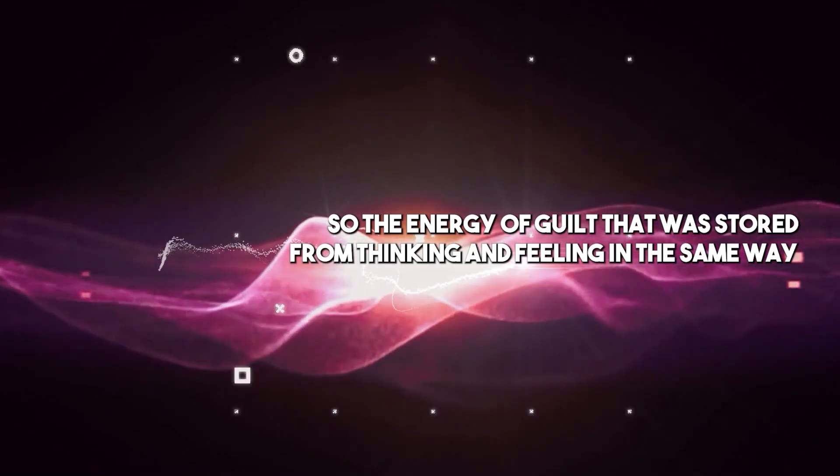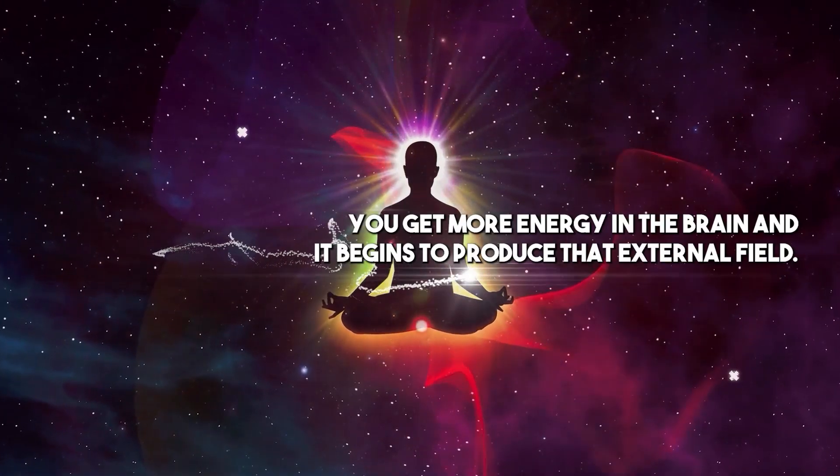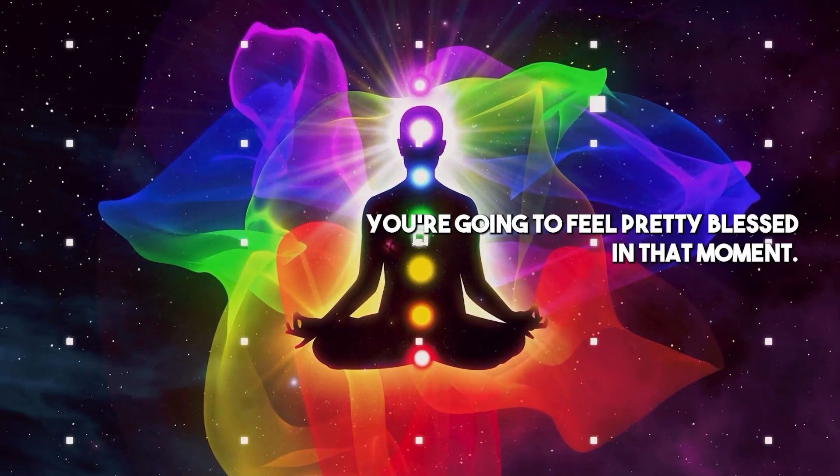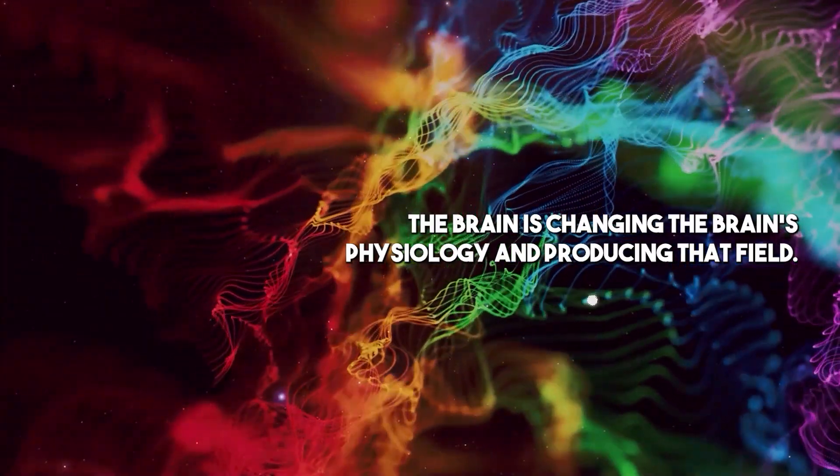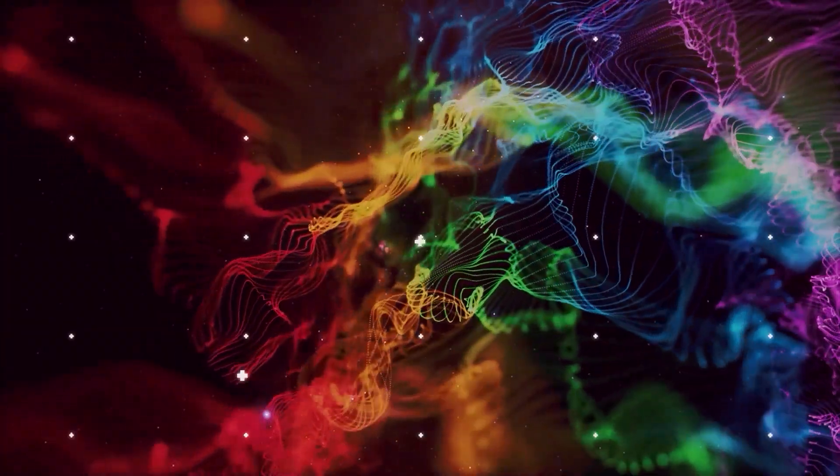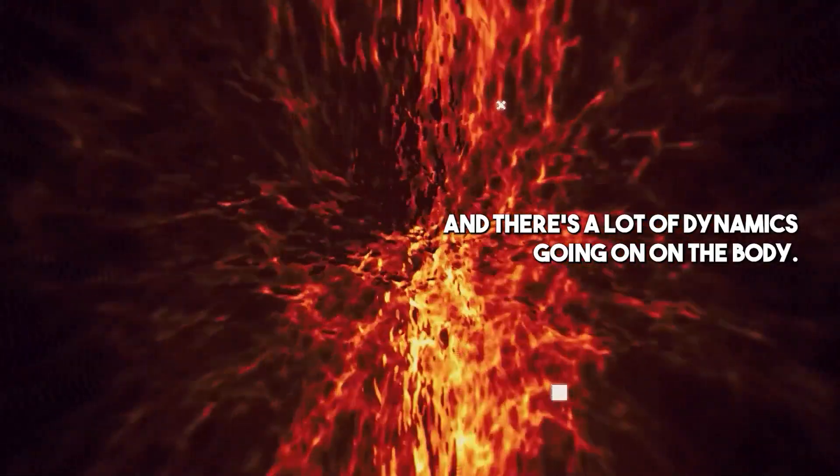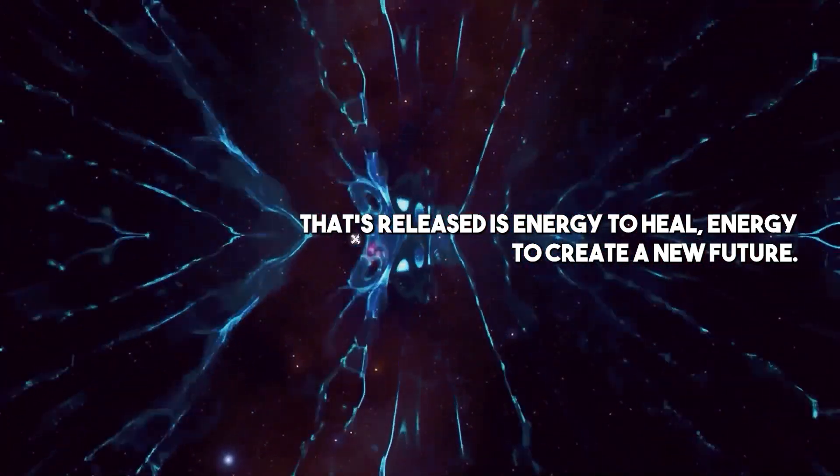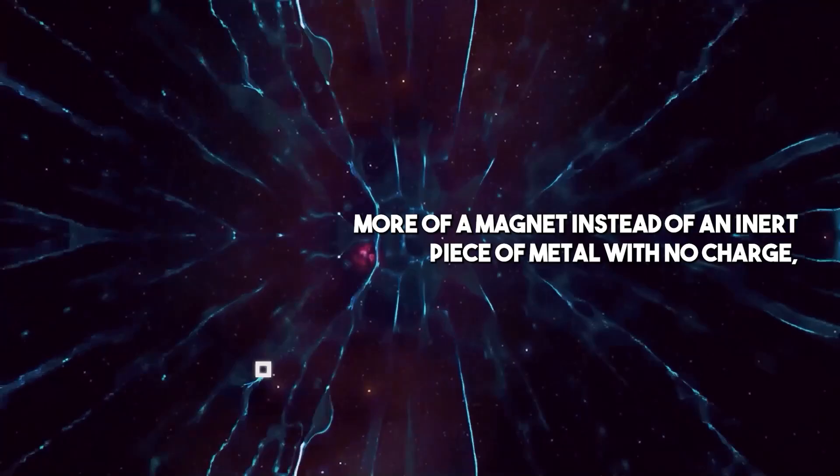The energy of guilt that was stored from thinking and feeling in the same way releases and travels up to the brain. You get more energy in the brain and it begins to produce that external field. You're beginning to create a field around your body. That rush of energy moving into the brain is changing the brain's physiology and producing that field. Now you have energy to heal. Now the body is a magnet again. That energy that was once stored in those energy centers is released as energy to heal, energy to create a new future. You're replenishing your field and the body becomes more of a magnet instead of an inert piece of metal with no charge.